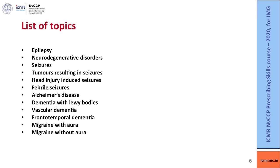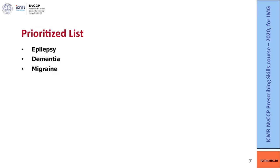Additional topics include vascular dementia, frontotemporal dementia, migraine with aura, and migraine without aura. After discussing with expert neurologists, we prioritized epilepsy, dementia and migraine.